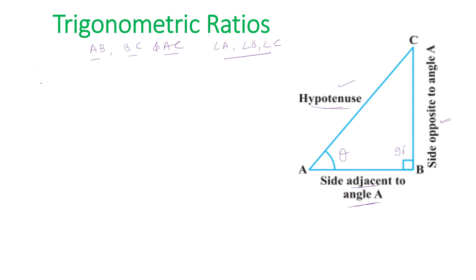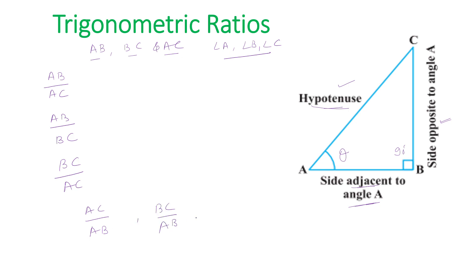Now we define the ratios of these three sides. We can write: AB upon AC, AB upon BC, BC upon AC, and their reciprocals — AC upon AB, BC upon AB, and AC upon BC. So we can write six ratios using these three sides.